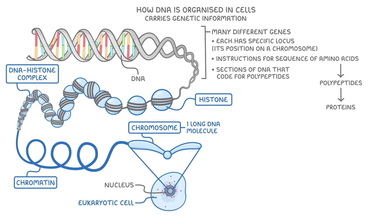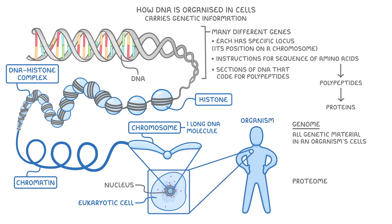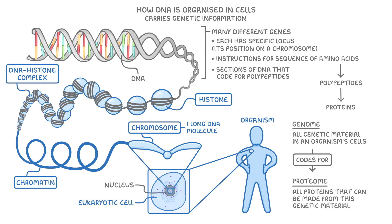A couple of other terms we need to know are the genome and proteome. When we refer to a genome, we're talking about all the genetic material in an organism's cells. So if our diagram here was taken from the cell of this person, all this genetic material would be their genome. And because the proteome refers to all the proteins that can be made from this genetic material, the genome effectively codes for the proteome.